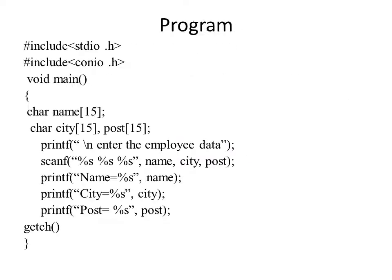Let's see both functions with the help of a program. This is a simple program that takes input from the end user about an employee's data — name, city, and post — and displays whatever is entered. First I have included the header files. Inside main, three arrays are needed. These are not integer or float data types but character data types, so I have declared three character arrays: char name[15], char city, and char post.